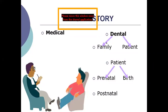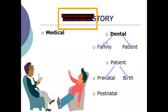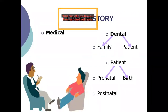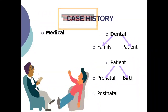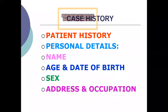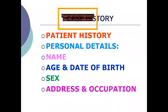We have a question also in the exam papers regarding medical history in orthodontics. So medical history in orthodontics is very important - it has been there in the papers. The patient history, all of it, is very, very important. The personal details including the name, age, date of birth, sex, address, and the patient's geographical location are very, very important.